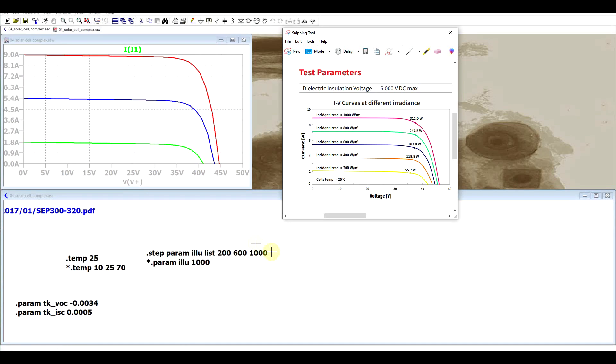So in the simulation I've only simulated three illumination values: the 1000 watt per square meter, 600 and 200. We have this upper curve, the middle curve and the bottom curve and we can see that the values mostly agree in between the model and the datasheet so it's not perfectly the same but they're close enough. We get slightly lower currents at minimum illumination but the voltages are roughly in the area they should be.